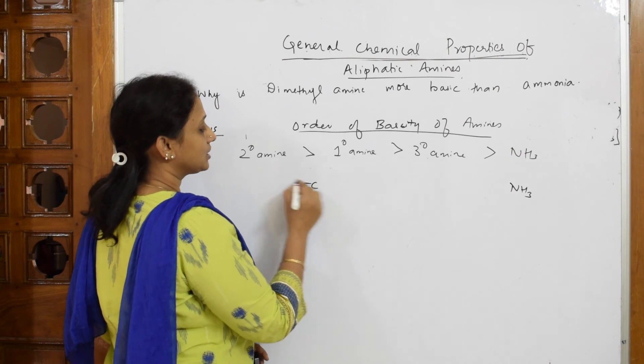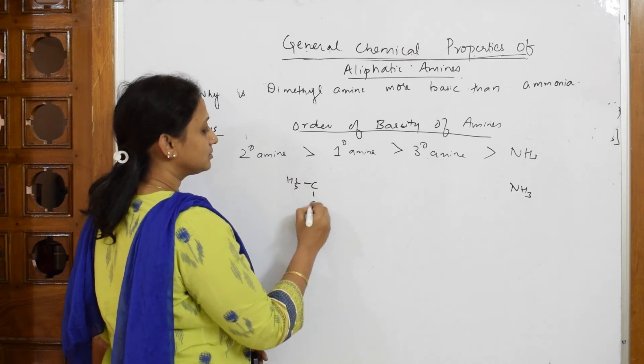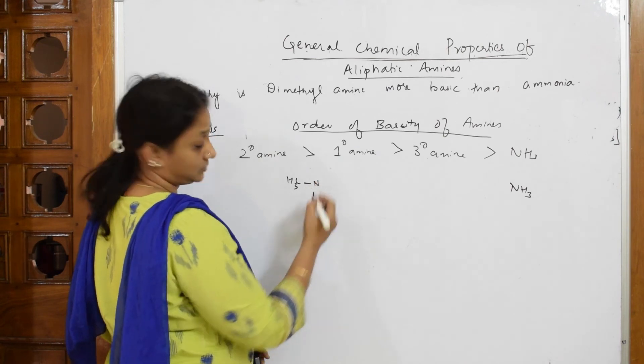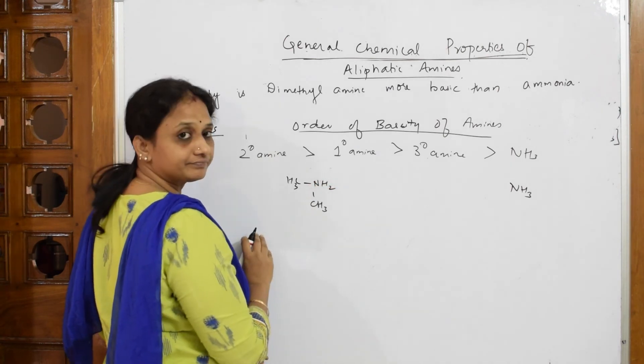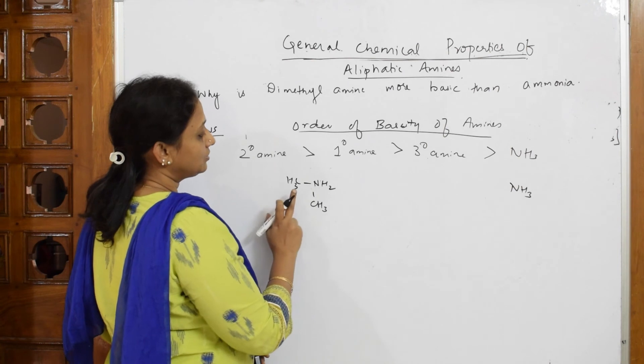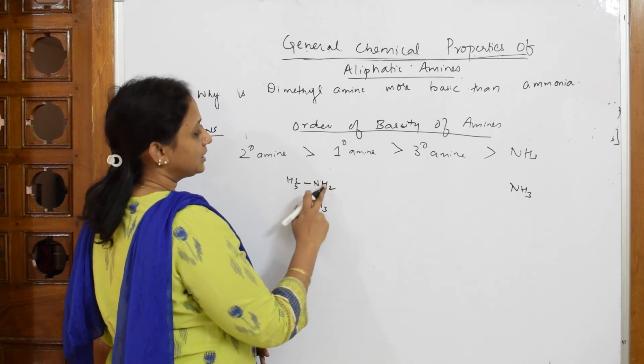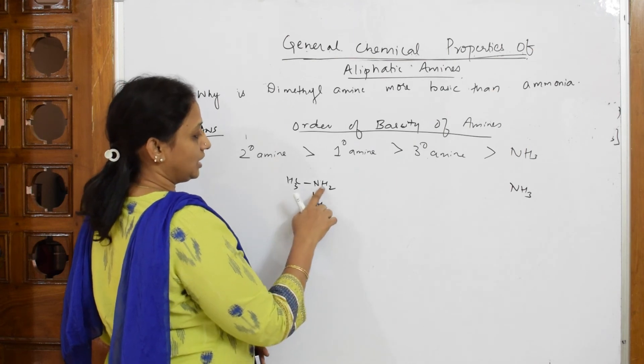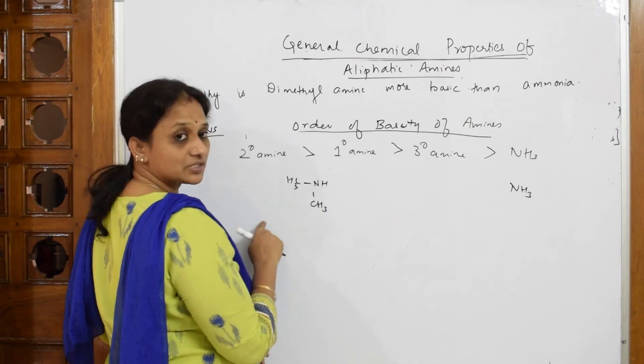Dimethyl amine, right. Dimethyl amine, done. Now, this dimethyl amine. They said, what is this particular thing? What is the mistake that I do here? Amine, they said. So one hydrogen, isn't it?